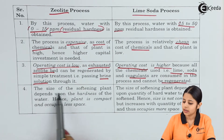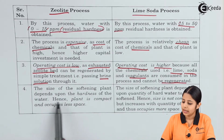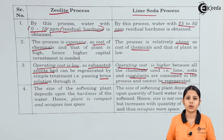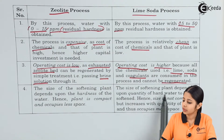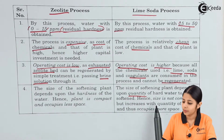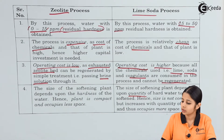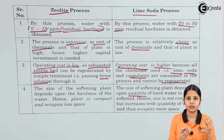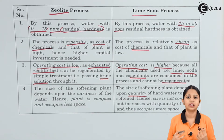Point four: for the zeolite process, the size of the softening plant depends on the hardness of the water, so the plant is compact and occupies less space. You only need a zeolite bed — water is poured in, it reacts spontaneously, and soft water is obtained. For the lime soda process, the plant size depends on the quantity of water to be softened, so it is not compact and occupies more space as quantity increases.